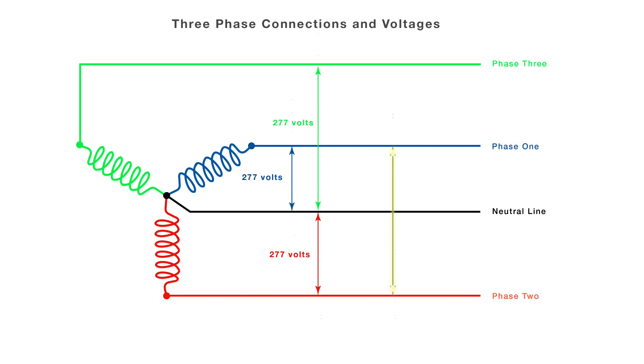First, phase one to phase two reads 480 volts, which is phase one to neutral, 277 volts, times root three, or 1.73. 480 volts is read phase one to phase three, and the same voltage phase two to phase three.